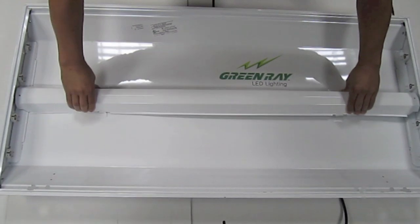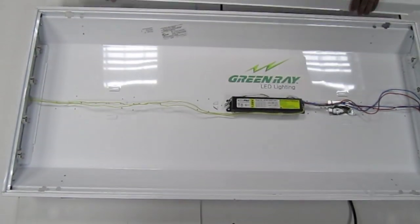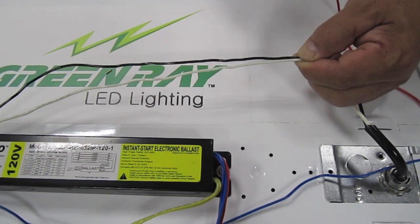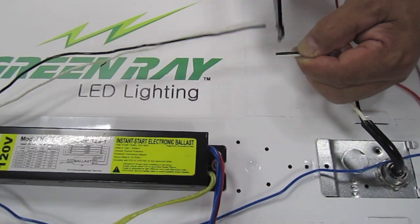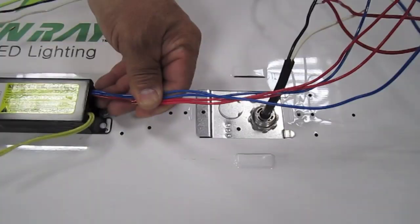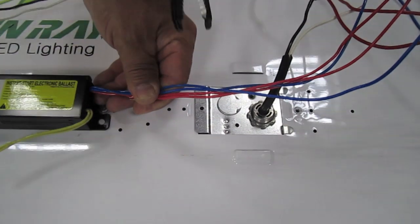Remove the ballast cover. Clip the black and white wires. Clip the blue and red wires.